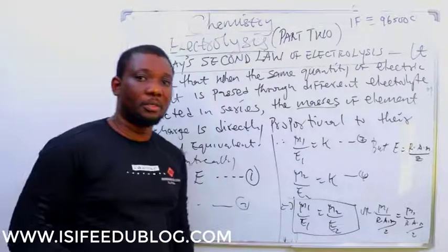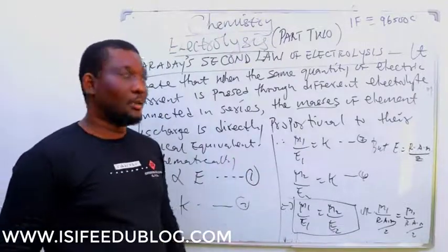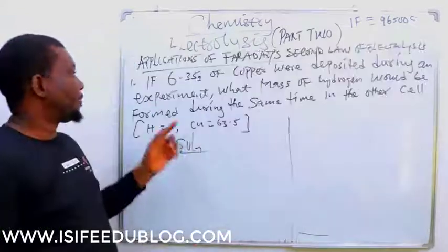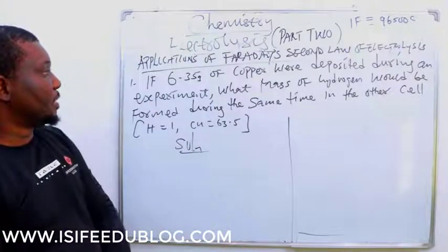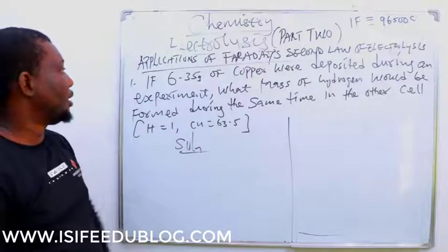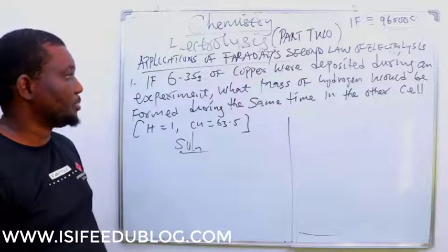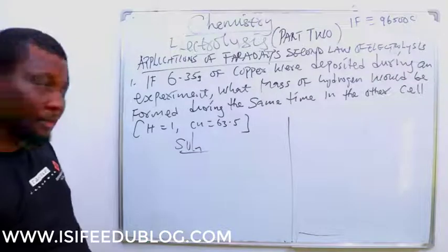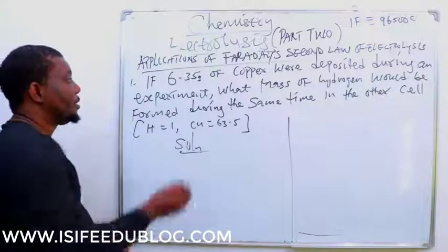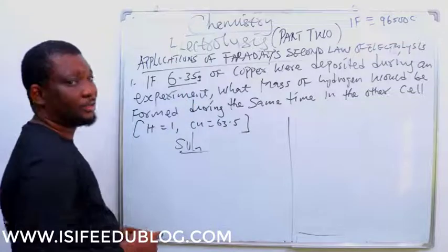We're going to try two examples on this second law of electrolysis. If 6.35 grams of copper were deposited during experiments, then what mass of hydrogen would be formed during the same time in the other cell? So now we already know the mass of copper.